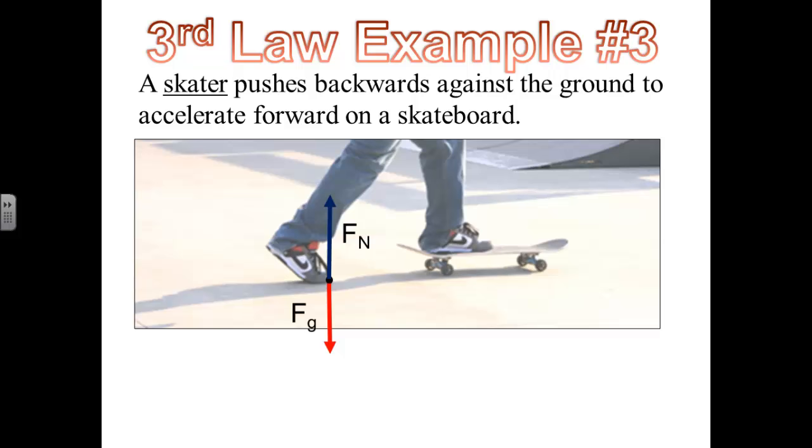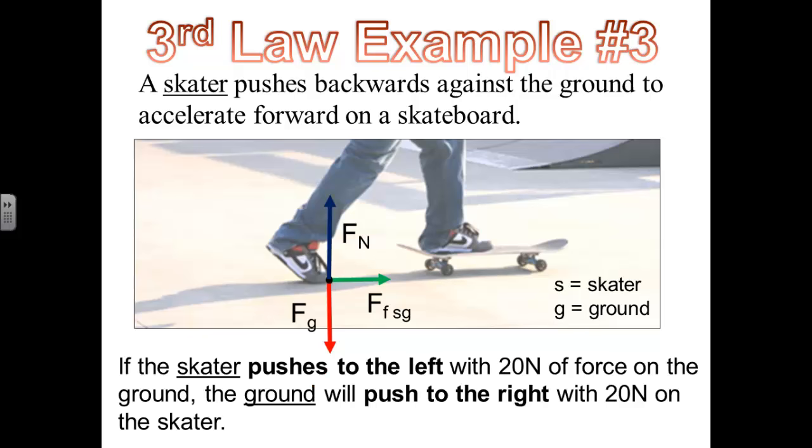And if the skateboarder is pushing back against the ground, we know that Newton's third law says the ground has to be pushing back in the opposite direction on the skateboarder. And that actually happens because of friction, so we're going to call that forward push the force that's accelerating the skateboarder to the right in the forward direction. We're going to call that the force of friction on the skater by the ground, because the ground's actually pushing the skateboarder forward. Only because the skater pushed back on the ground, therefore the ground pushed the skater forward. And if the skater pushes to the left with 20 newtons of force on the ground, we know that the ground has to push to the right with the same size force, 20 newtons on the skater to the right.